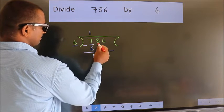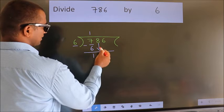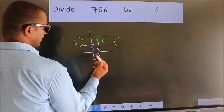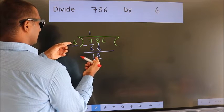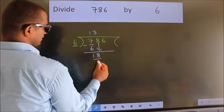After this, bring down the beside number. So 8 down. So 18. When do we get 18? In 6 table, 6 threes, 18.